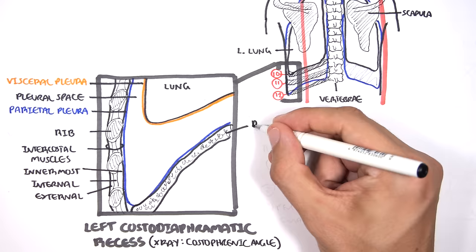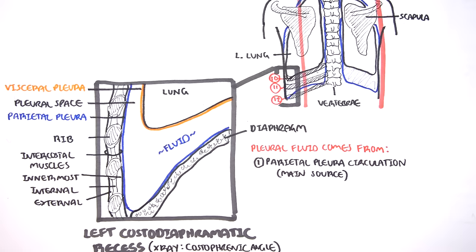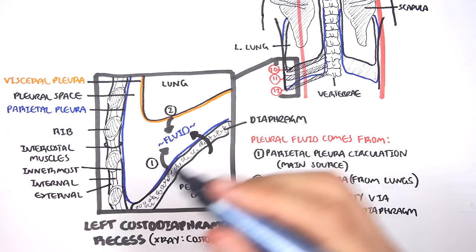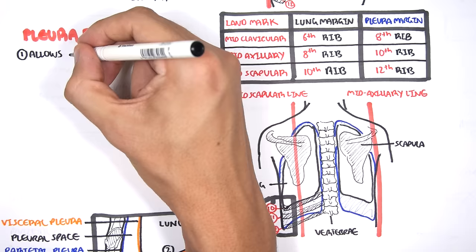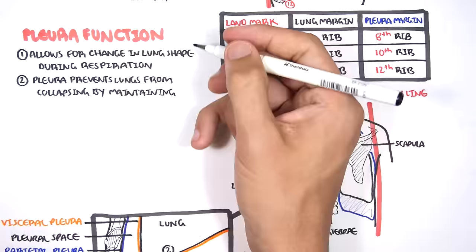The diaphragm attaches superiorly to the parietal pleural layer. Pleural fluid fills the pleural space and comes mainly from the parietal pleural circulation. It also comes from the visceral pleural circulation from the lungs, and partly from the peritoneal cavity via small holes in the diaphragm. The pleural membrane has two main functions: firstly, because it attaches to the lungs and the thoracic wall, it allows for changes in lung shape during respiration; and secondly, the pleura prevents the lungs from collapsing by maintaining positive transpulmonary pressure.